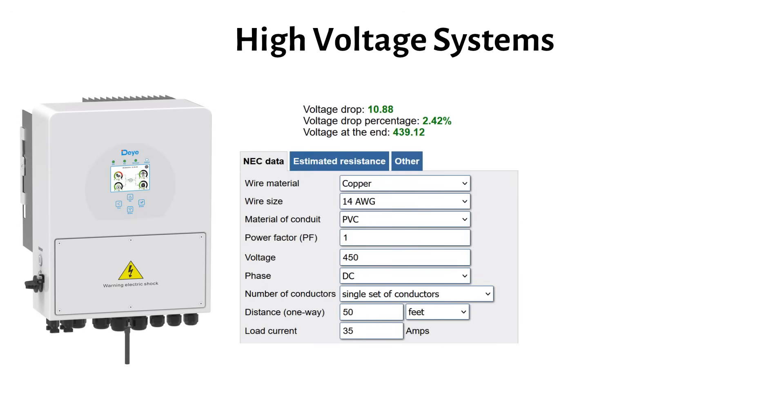For example, if we change the voltage to 450 volts and the current to 35 amps, the calculator might say that 14 gauge or 2.5 mm square has a voltage drop of 2.42%. That's good, right? Not so quick.